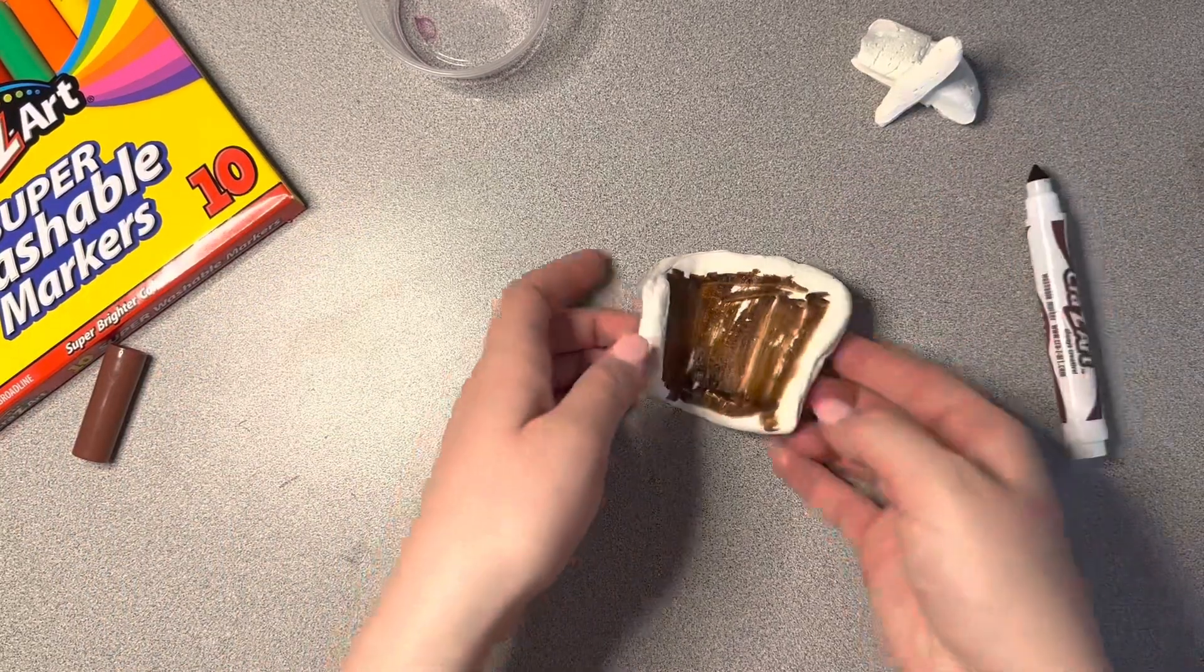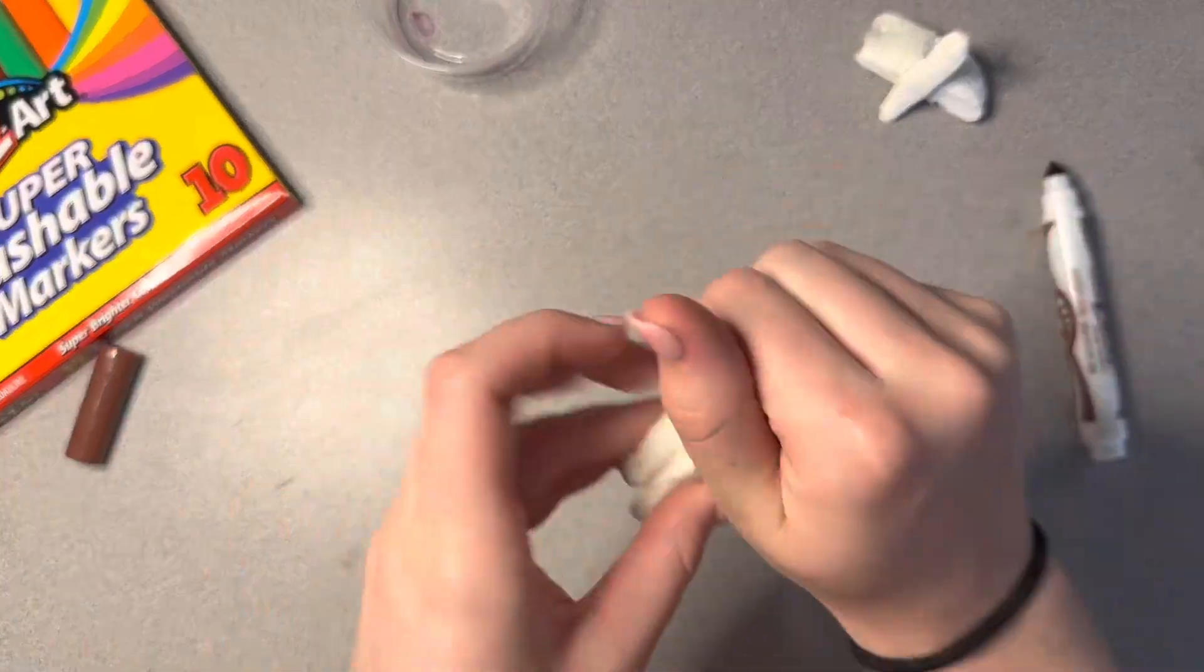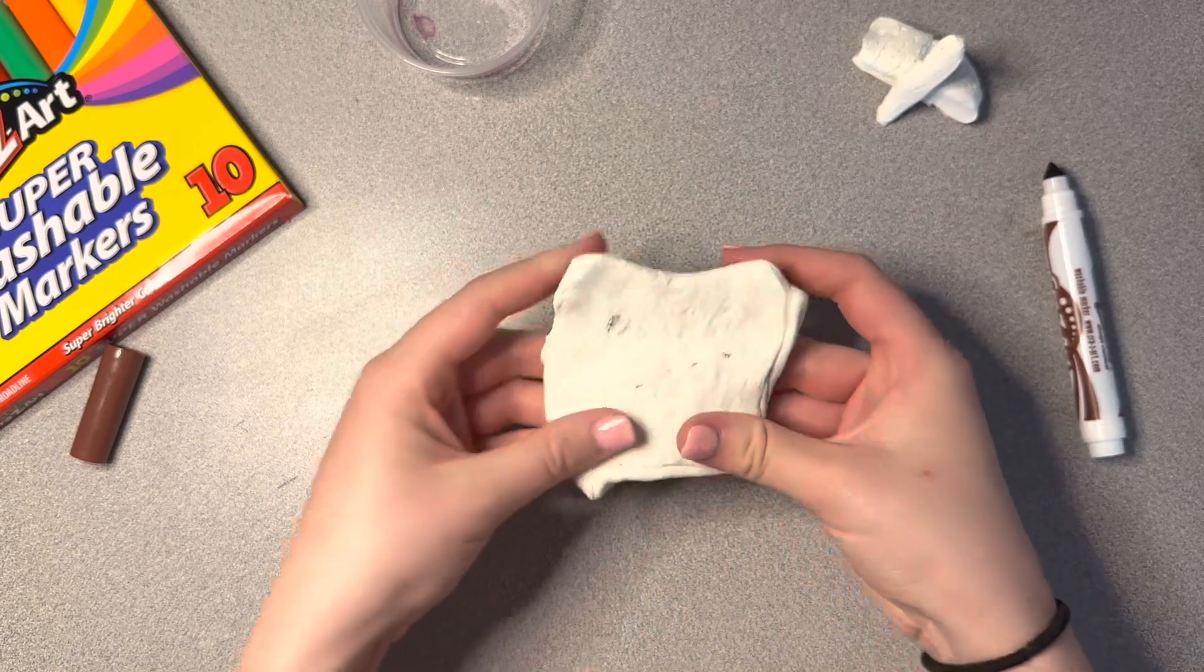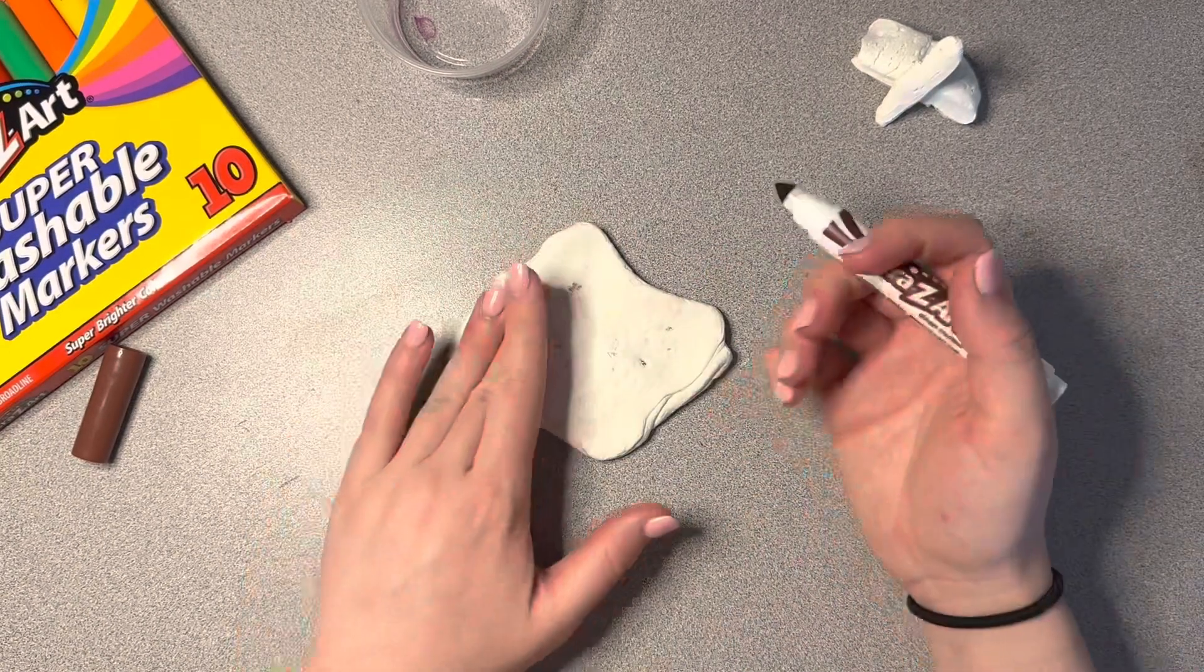If you wanted like a chocolate cookie, you would still use brown, you would just use more brown. But because I want mine to be kind of like a tan color, I'm not going to do as much.